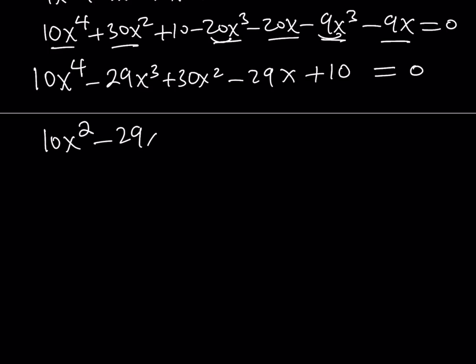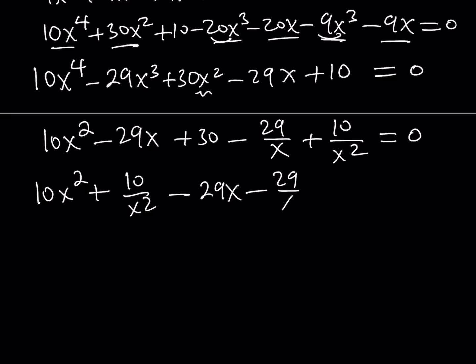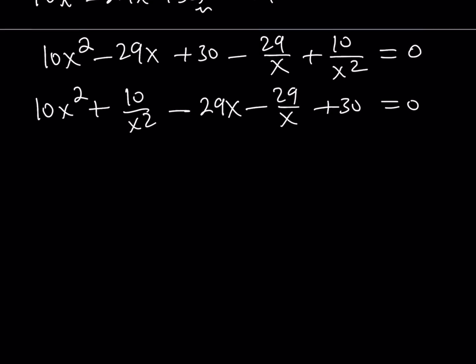10x squared minus 29x plus 30 minus, when we divide by x squared, it's going to be 29 over x, and it's going to be 10 over x squared. So when you divide both sides by the variable term in the middle, because it's symmetrical, you're going to get two terms that kind of pair up nicely, like 10x squared and 10 over x squared. We can put those together now. And then, of course, we have the negative 29x minus 29 over x, and finally, we have the plus 30.